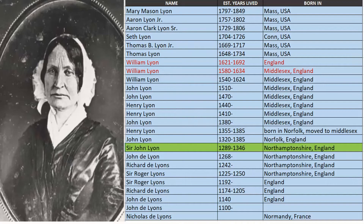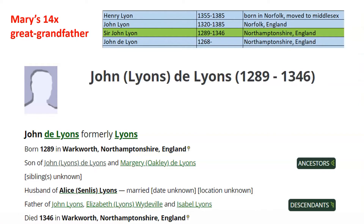Let's show Mary's pedigree chart, starting with herself born in 1797 in Massachusetts, going back until we get all the way to a man named Sir John Lyon, who was born around the year 1289 AD in Northamptonshire, England. He is Mary's 14th great-grandfather, and he was the son of John Lyons and Marjorie Oakley.